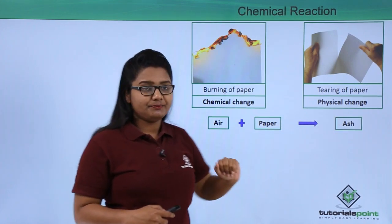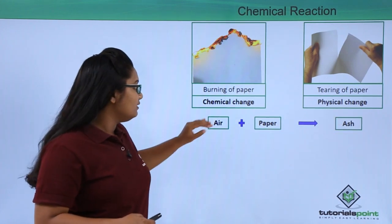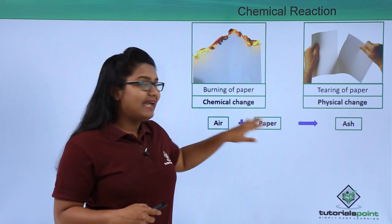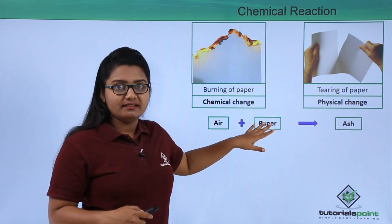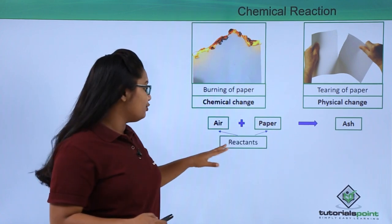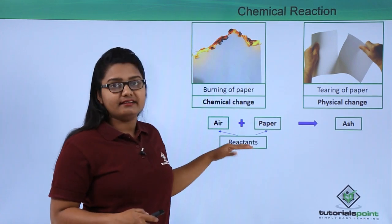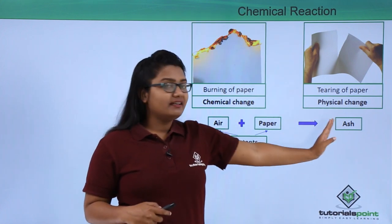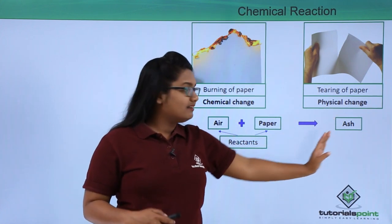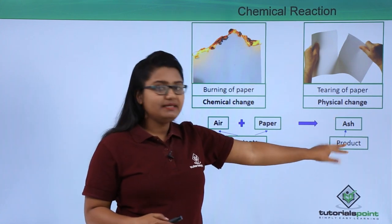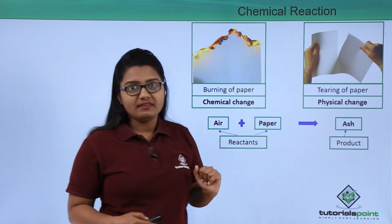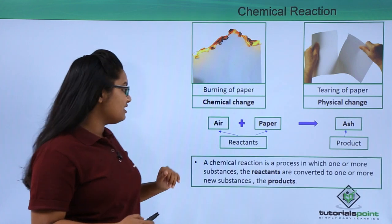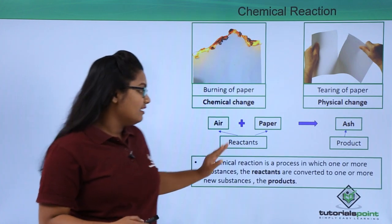The two things that reacted together — air and paper — are called the reactants, and the thing we got at the end — ash — is called the product.